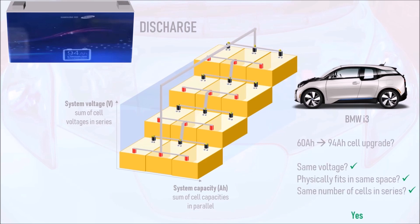In the case of the BMW i3, the old and new cells are the same voltage, meaning that there are the same number of steps in the staircase and the cells physically fit in the same space. Therefore, old BMW i3s can be upgraded to new, higher capacity packs.